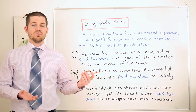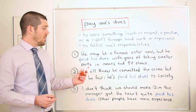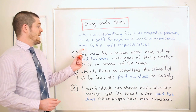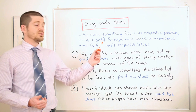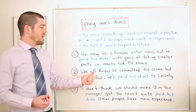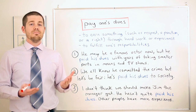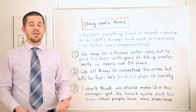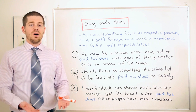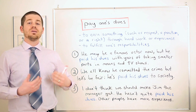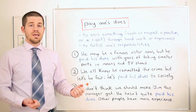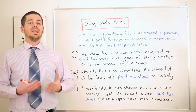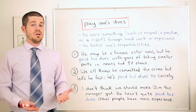The second example: 'We all know he committed the crime, but let's be fair — he's paid his dues to society.' This has the meaning of our second definition: to fulfill one's responsibilities. He committed a crime and went to jail, maybe for 10 or 15 years. Because he served that time, he fulfilled his responsibility. He did the punishment for committing the crime, and now that punishment is over, so he has paid his dues.